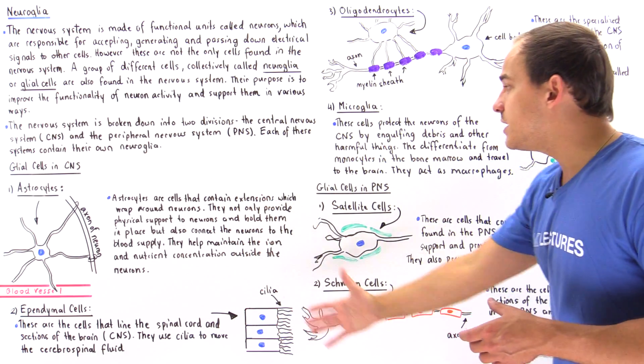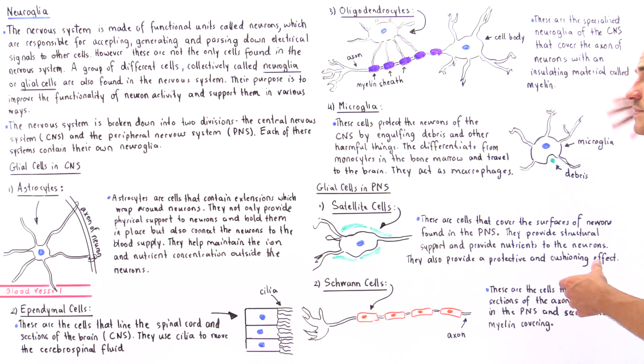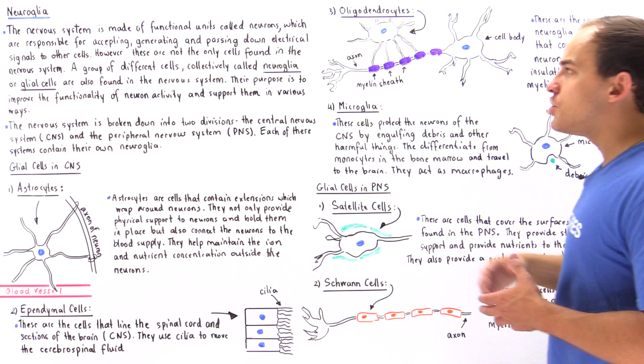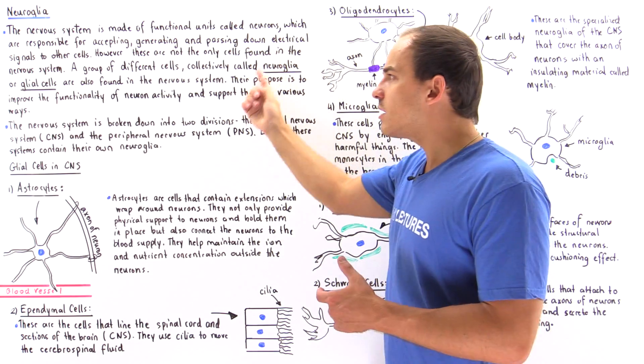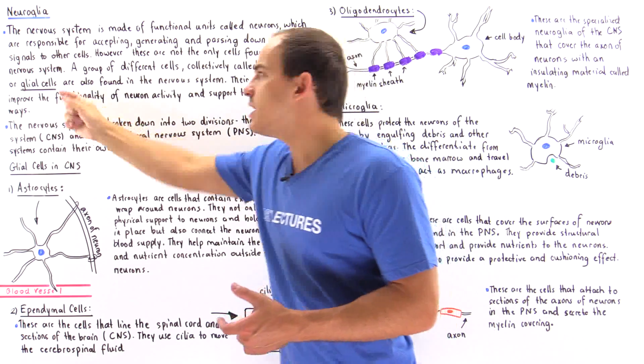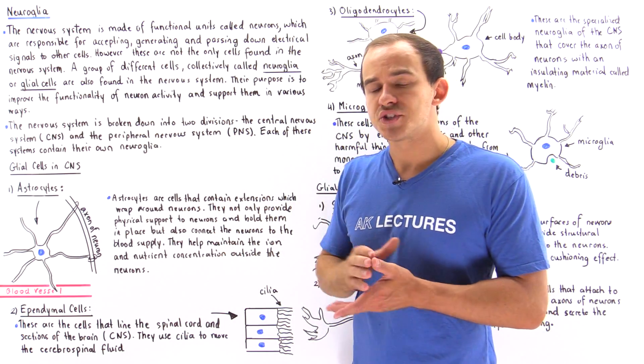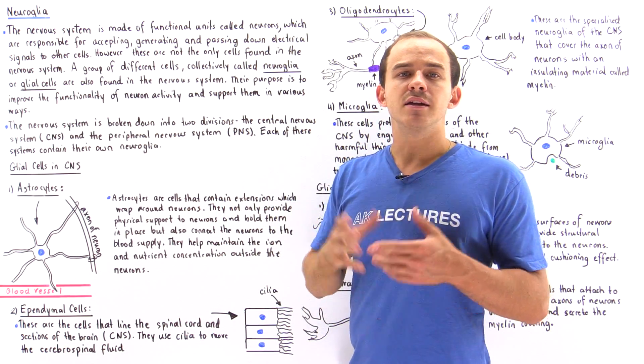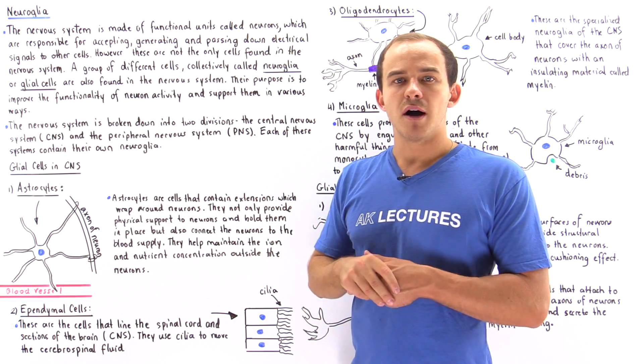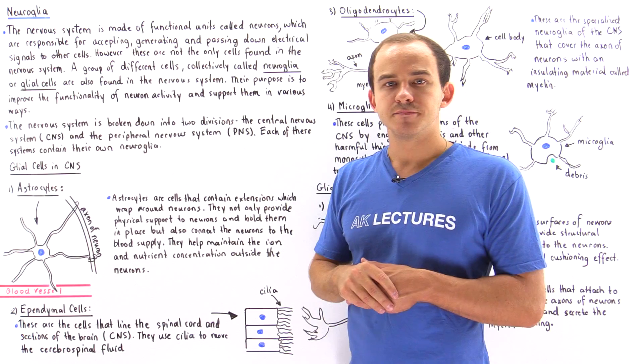So all these different types of cells — the four in the central nervous system and the two in the peripheral nervous system — are known as Neuroglia, glial cells, or support cells of the neurons found in the nervous system of our body.